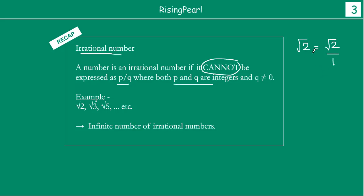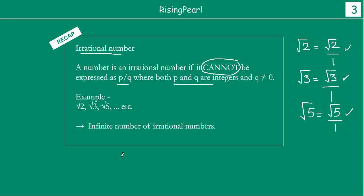You can always write square root 2 as square root 2 by 1, or square root 5 as square root 5 by 1. In each of these cases, the left hand side is the same as the right hand side, because if we divide by 1, it remains the same. But the important thing to notice is that even though you get it in this form, the numerator — square root 2, square root 3, square root 5 — these things are not integers.